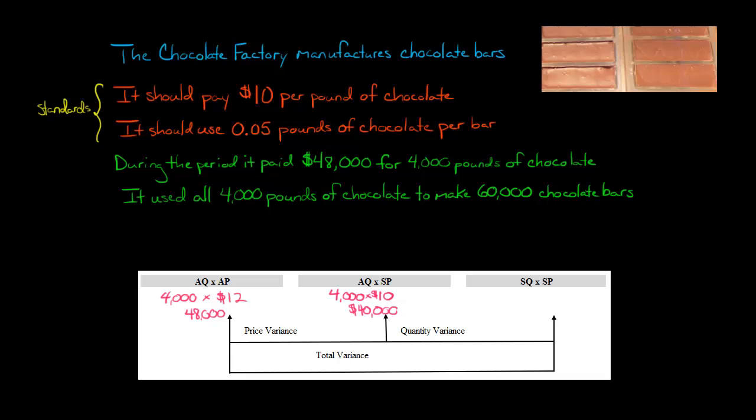All I'm doing is just multiplication there. And then so if we compare that to the $48,000 and the $40,000, there's a difference of $8,000. That's just the $48,000 minus the $40,000.